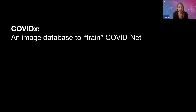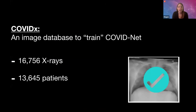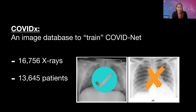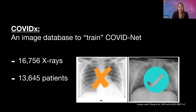These scientists developed an image database called COVIDX and used it to train COVID-Net. The image database is made up of over 16,000 chest X-rays from over 13,000 patients. By showing COVID-Net lots and lots of these X-rays — some that had COVID-19 and some that didn't — and correcting it every time it was wrong, COVID-Net is able to learn to identify those sometimes really subtle signs of COVID-19.